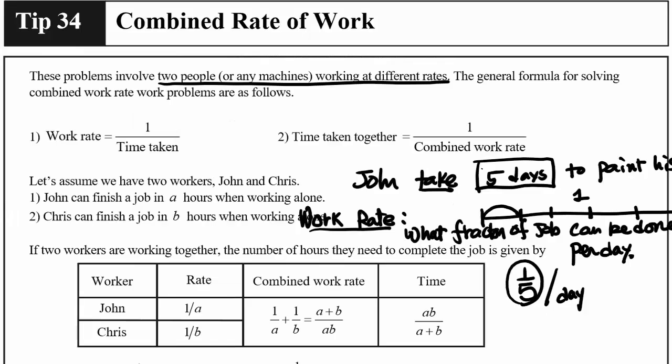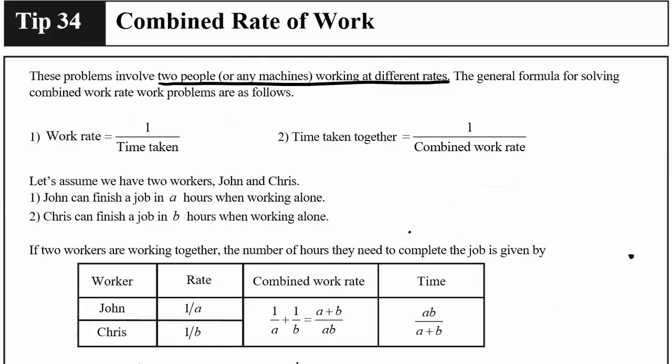Now I'm going to explain this in a little more detail using some numbers. John takes five hours to paint a house, or to finish some job.